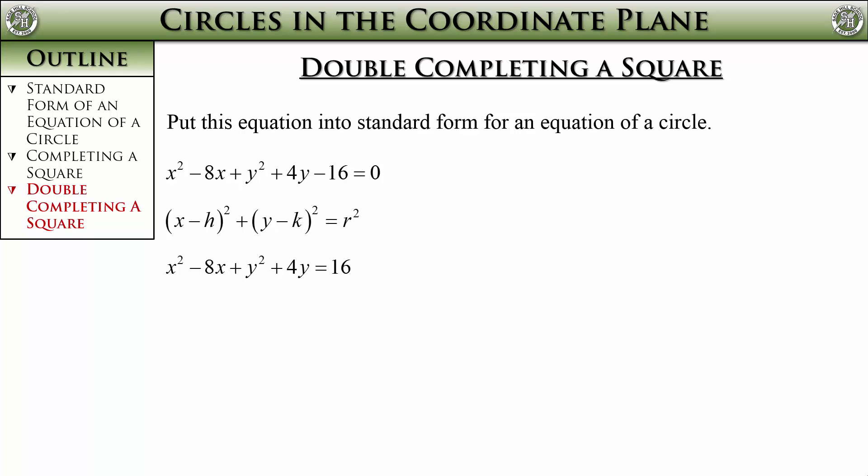To complete the square for the x part, we look at the coefficient for the x term, which is negative 8 here, we need to take half of the negative 8 and then square it. Negative 4 squared is 16, so we need to add 16 to both sides of our equation.